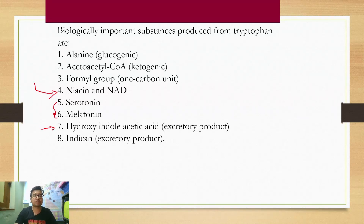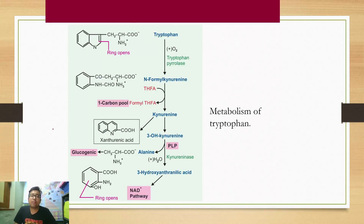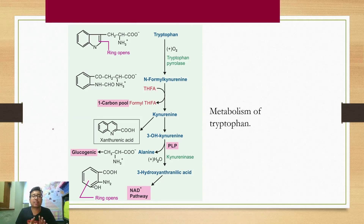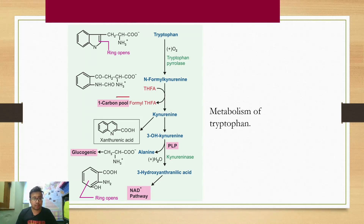You will find in your textbook a big, long pathway involving various intermediates — absolutely ignore that, you do not need to know that. But a few things you need to know: tryptophan is involved in one carbon metabolism. You just need to know that it is involved; how, you do not need to know.